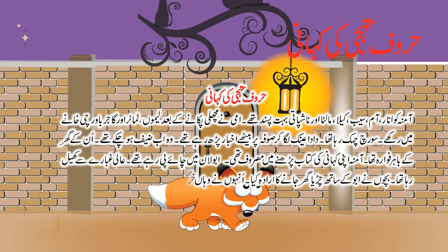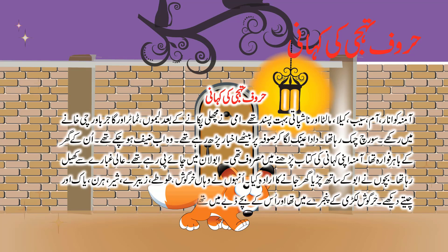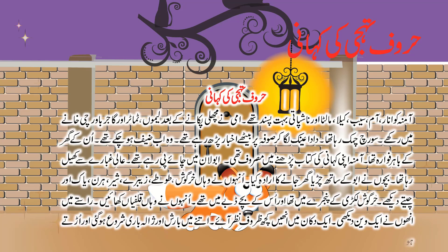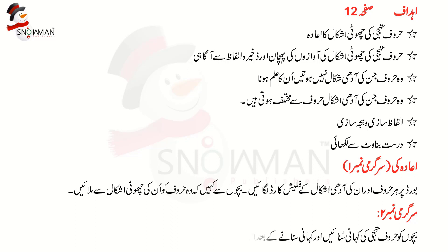بچوں نے ابو کے ساتھ چڑیا گھر جانے کا ارادہ کیا۔ انہوں نے وہاں خرگوش، طوطے، زیبرے، شیر، ہرن، یاک اور چیتے دیکھے۔ خرگوش لکڑی کے پنجرے میں تھا اور اس کے بچے ڈبے میں تھے۔ انہوں نے وہاں کلفی کھائی اور ایک ویں دیکھی۔ ایک دکان میں انہیں کچھ حروف نظر آئے۔ اتنے میں بارش اور ژالہ باری شروع ہو گئی اور اڑتے ہوئے ٹڈے زمین پر گر گئے۔